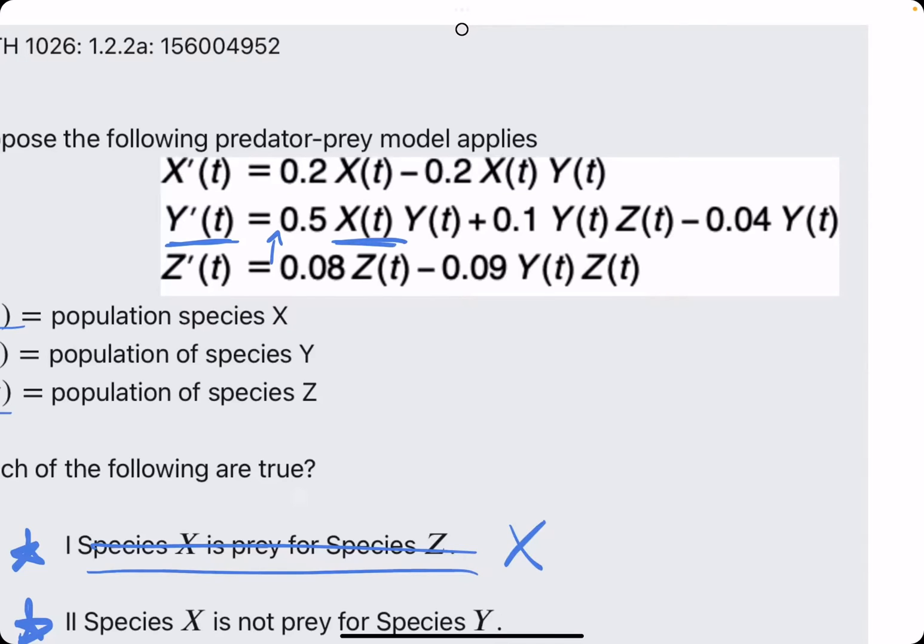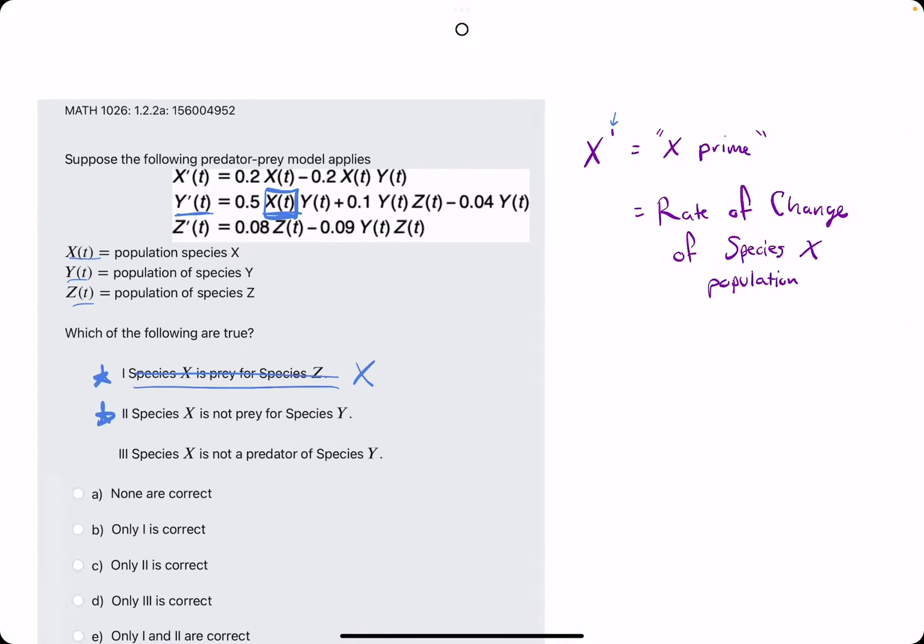The more X species there is, the more positive effect it'll have on the Y population, meaning that Y feeds on X—Y preys on X. So it looks like Y is the predator for X because the more X there are, the more positive effect on Y.